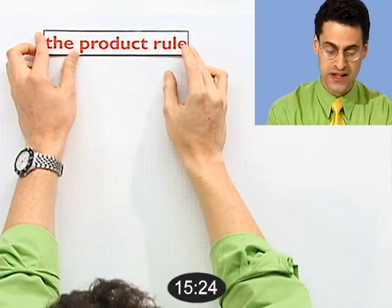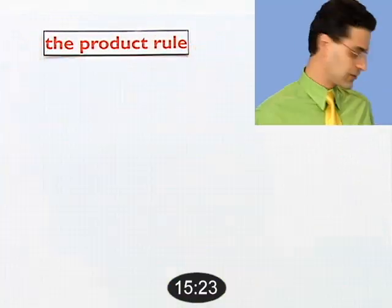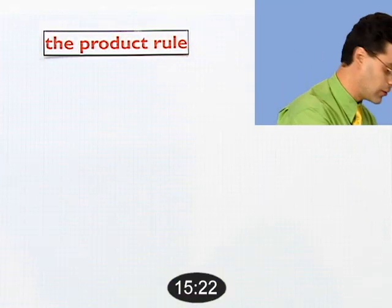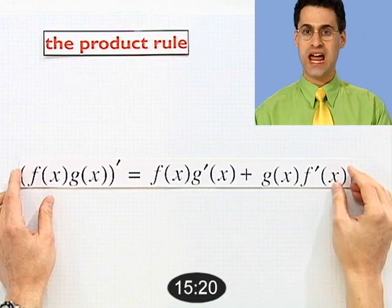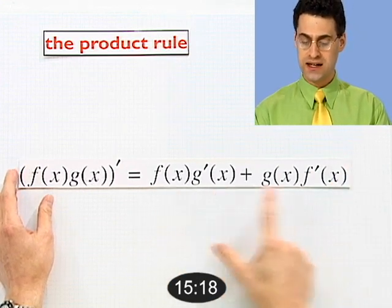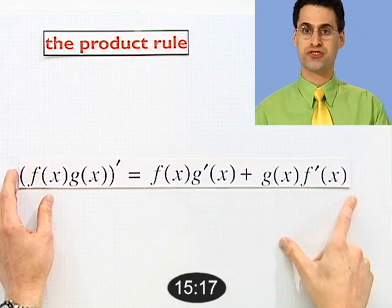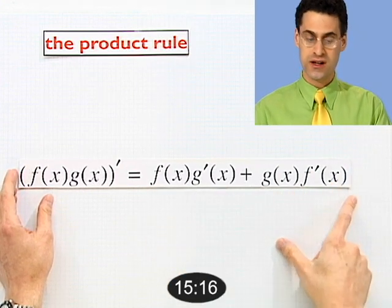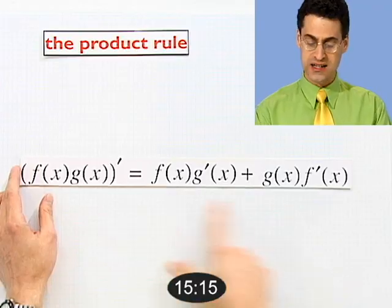Now let's look at applications — how do you take derivatives of complicated functions? If you've got a product, use the product rule. Memorize the chant: first times the derivative of the second, plus the second times the derivative of the first. The derivative of a product is not just the product of the derivatives.